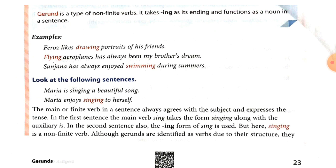Now, students, look at these sentences. Maria is singing a beautiful song. Maria enjoys singing to herself. In the first sentence, singing is the main verb because it changes according to the tense. This sentence is written in the present continuous tense.